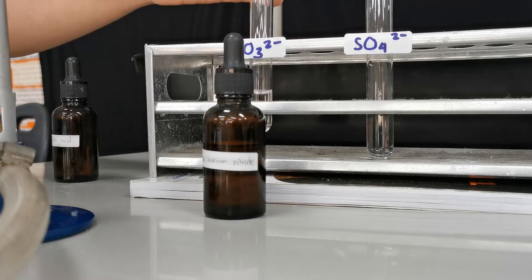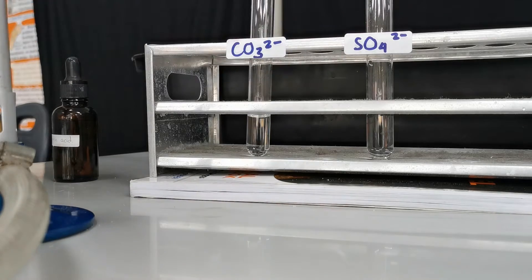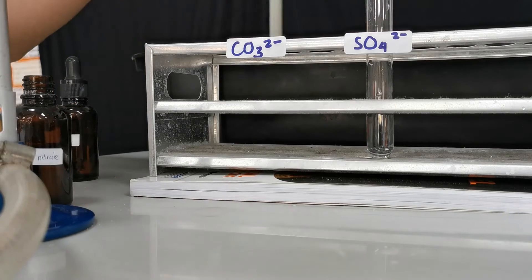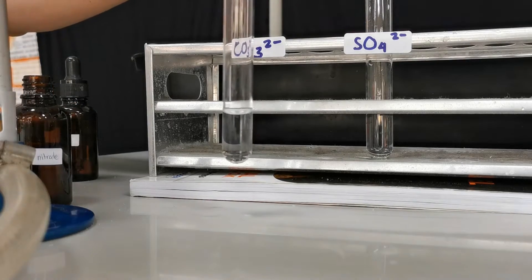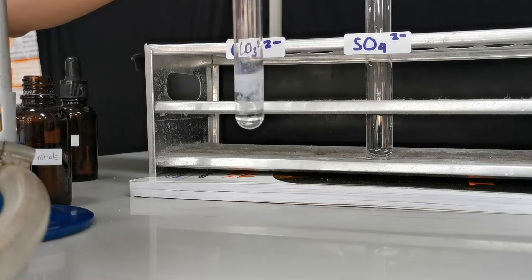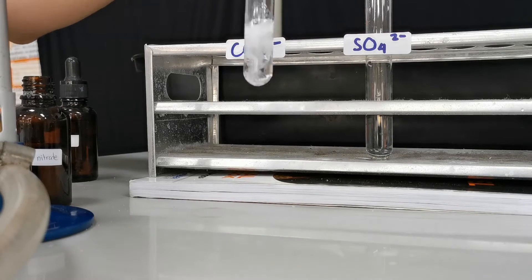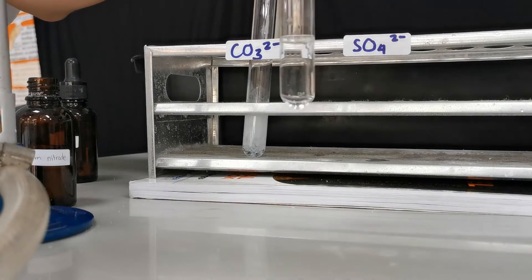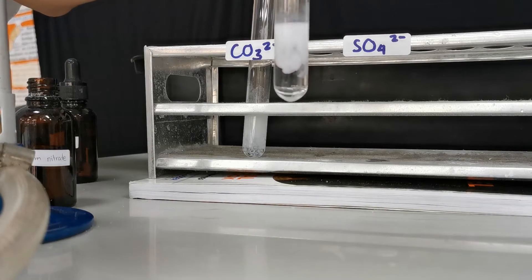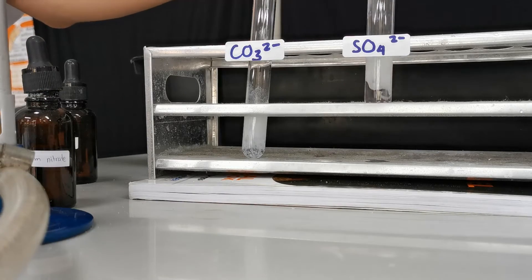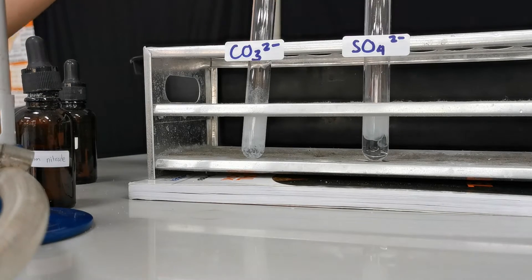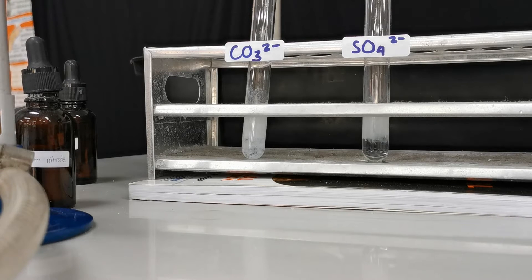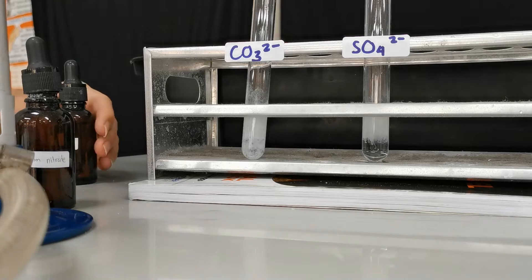However, carbonate also reacts with barium ion to give white precipitate. Let's see. Here I add aqueous barium nitrate into carbonate and it gives white precipitate. If I add the same thing to sulfate, we will also get white precipitate. Now to distinguish between carbonate and sulfate, we need to add an extra step, which is the addition of nitric acid.